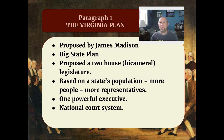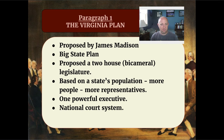James Madison also believed that we needed an executive, and he wanted that executive to be powerful so that they could make decisions without having to consult lots of other people. So they proposed a one-person executive, and the Virginia Plan also proposed a court system. The one thing the Virginia Plan and the New Jersey Plan have in common is that they both proposed a national court system, which we did not have under the Articles of Confederation. If states had a beef with each other, there was absolutely no way to resolve it, so the national court system is one thing that pretty much everybody agreed on.